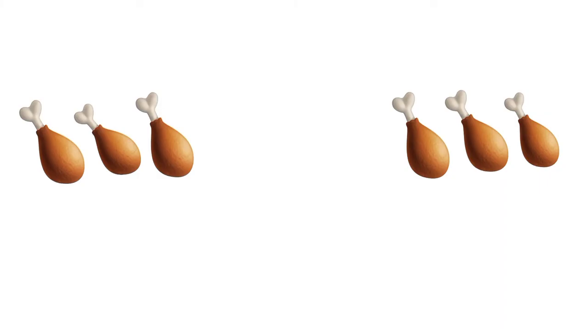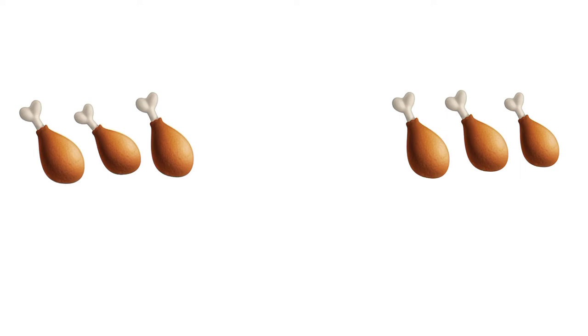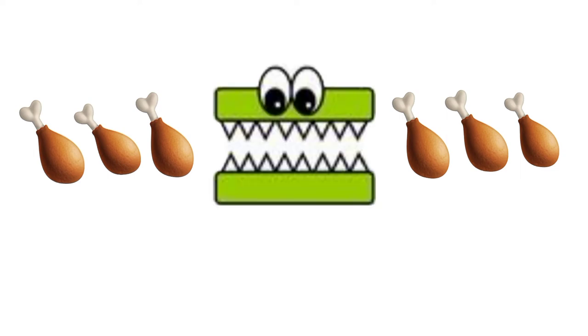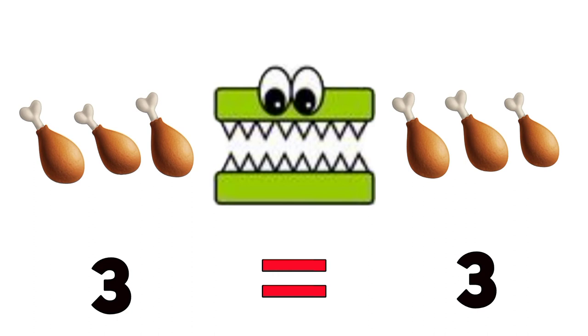How about sets with the same number of objects? We call them equal sets. Just like these sets of fried chickens. At the left, there are 3. And at the right, there are 3 as well. So, they are equal sets. Equal sets have the same number of objects. So, we say that 3 is equal to 3.